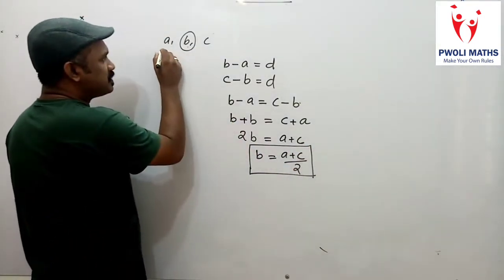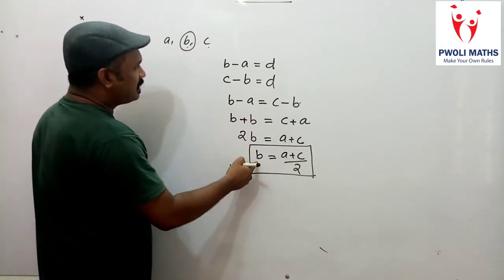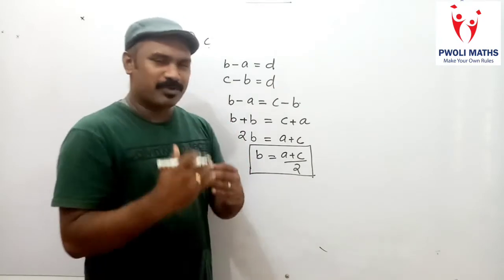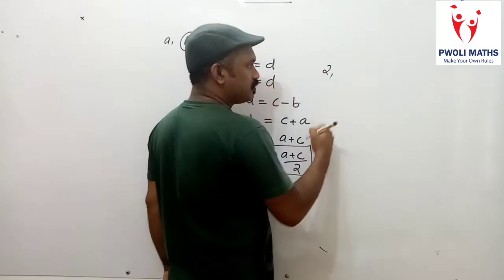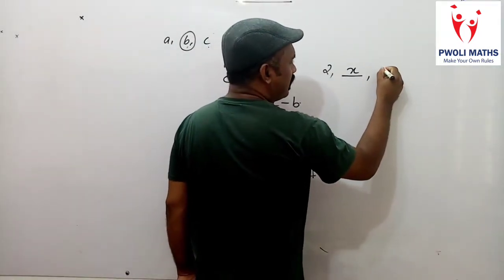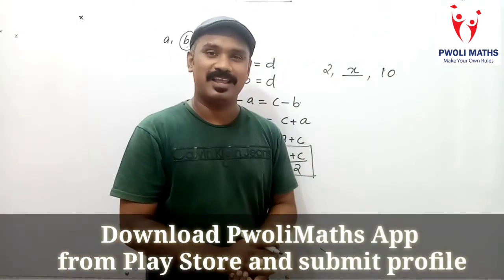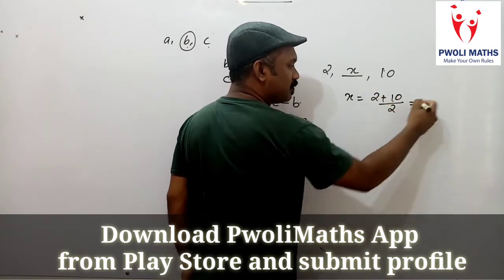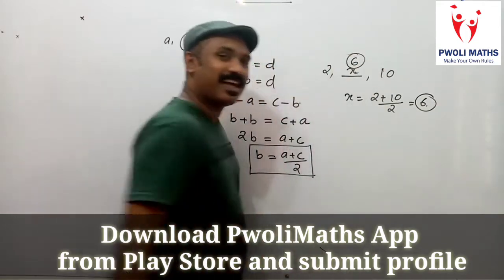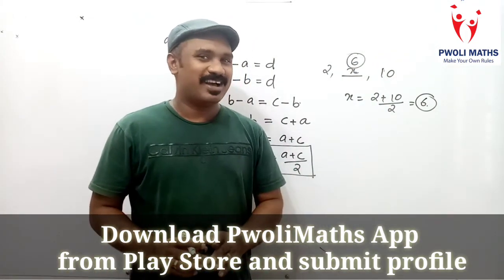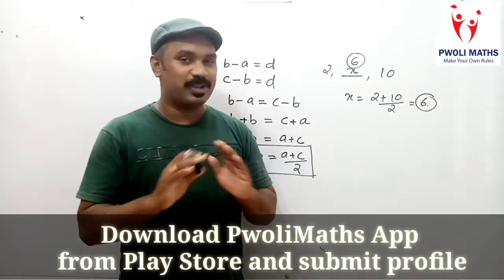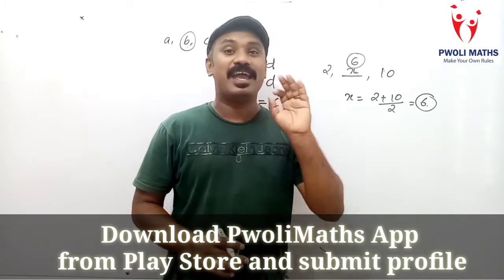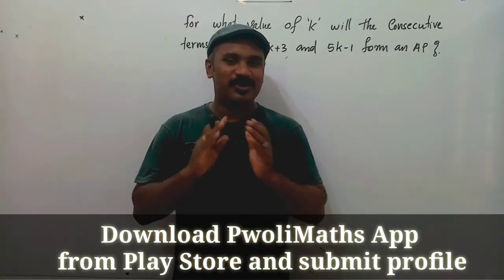If A, B, C are three consecutive terms of an arithmetic progression, then the middle term B is equal to A plus C divided by 2. For example: in an arithmetic progression with first term 2, second term X, third term 10 — X equals 2 plus 10 divided by 2, that is 12 by 2, which is 6.